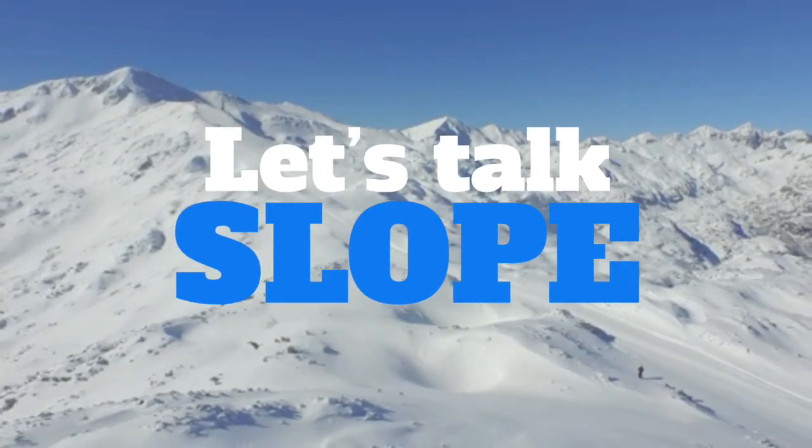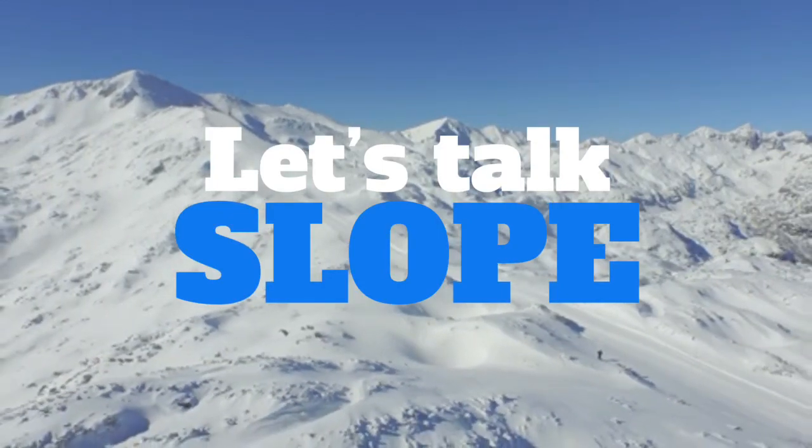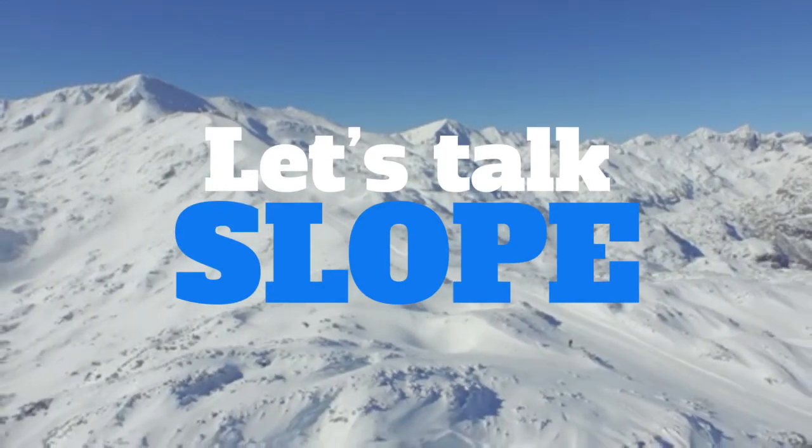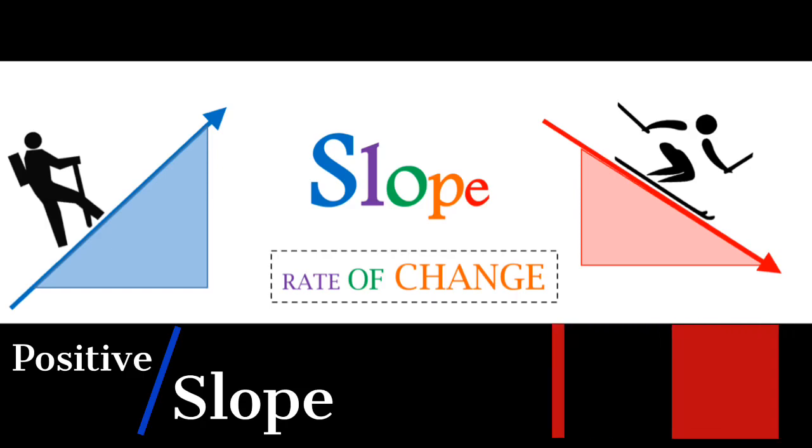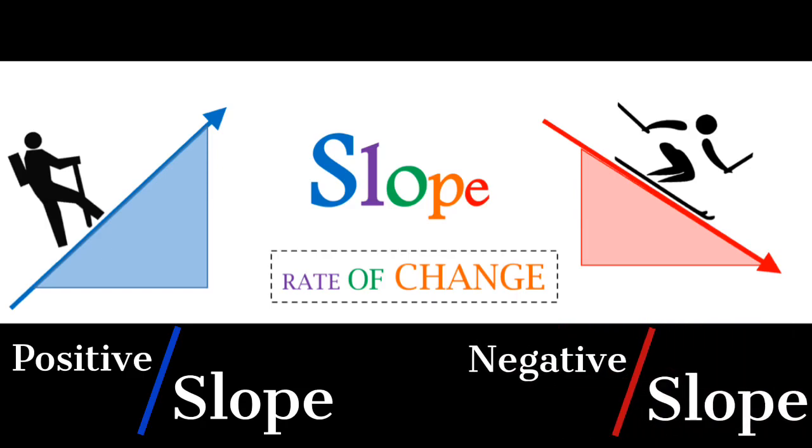Let's talk about slope. Here you can see a mountain slope. It's pretty steep, huh? In algebra, slope is the steepness of a line, also known as rate of change. The slope can be positive when it's going up, or negative as it goes down.